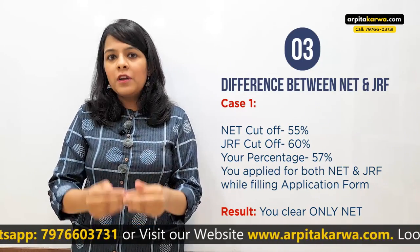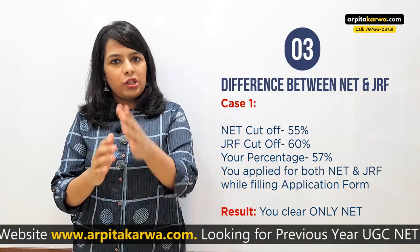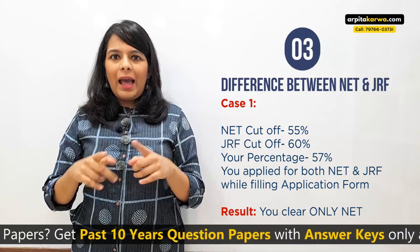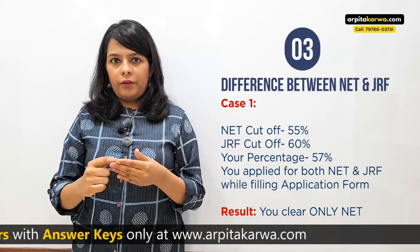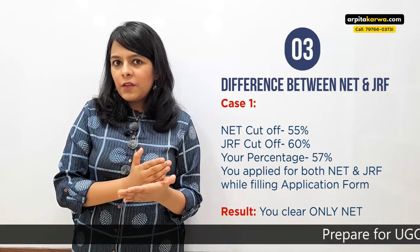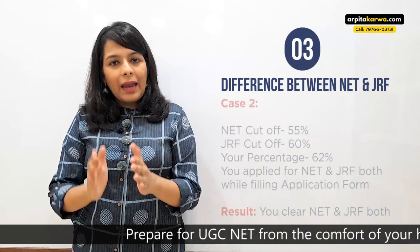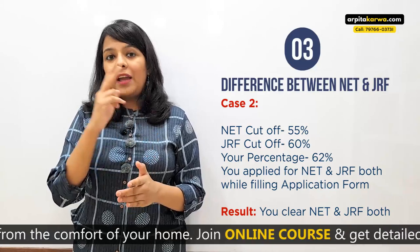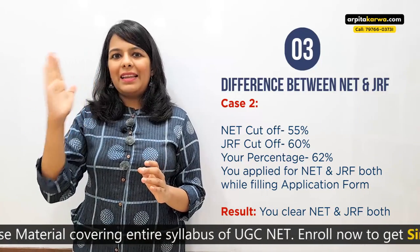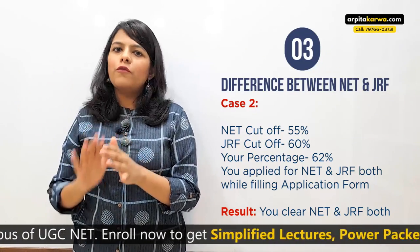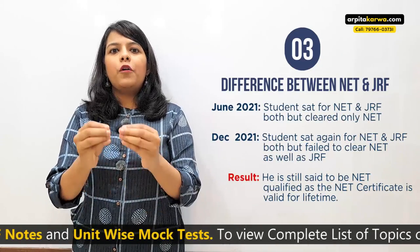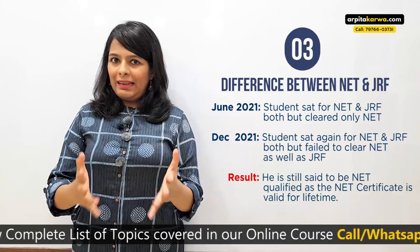Another question students ask: suppose the cutoff for NET is 55 and the cutoff for JRF is 60, and I get 57 — if I fill NET and JRF both, will I get NET or do I need to clear both? Let me clarify: if your marks are 57 and the cutoff for NET is 55, you will clear NET. If you score 62 and the cutoff for NET is 55 and JRF is 60, you clear both. There's no harm in checking both options.